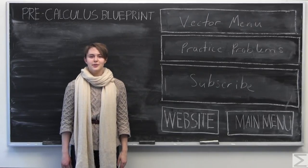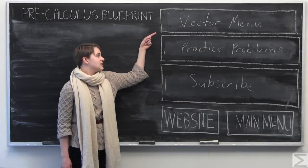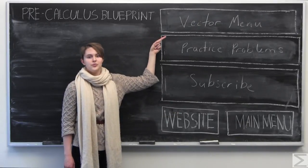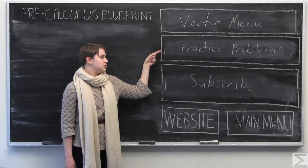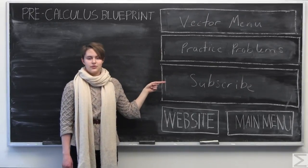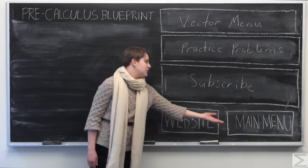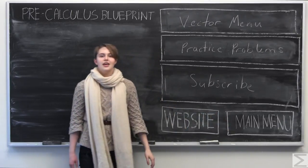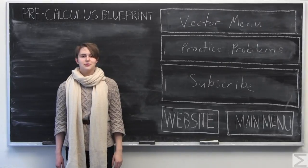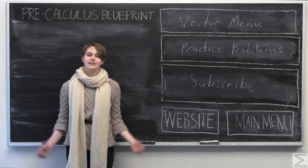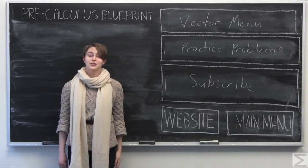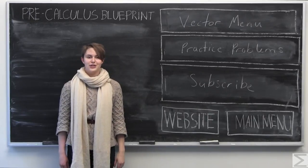To return to the vector menu, click here. To see more additional practice problems worked out, you can click here. To subscribe to our YouTube channel, click this link here. To visit the main menu, click this link here. And remember, if you haven't already done so, you can purchase the precalculus blueprint by clicking on the link in the description of this video. Remember, it's only $1.95. Thank you for watching.